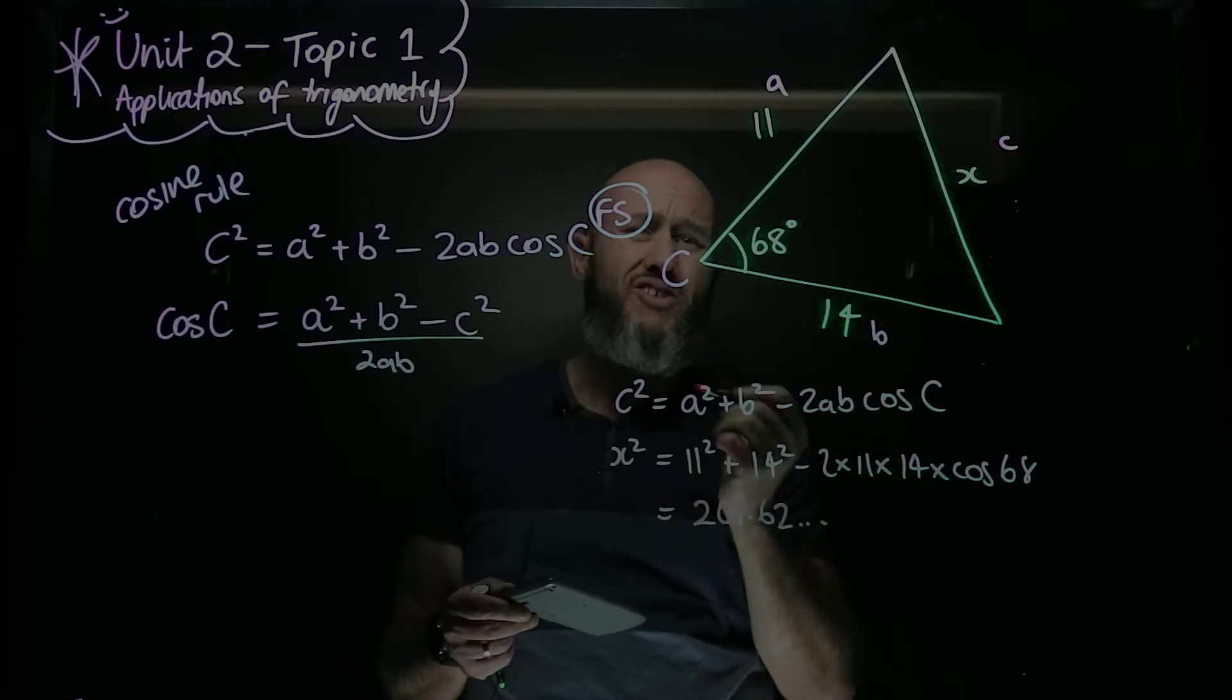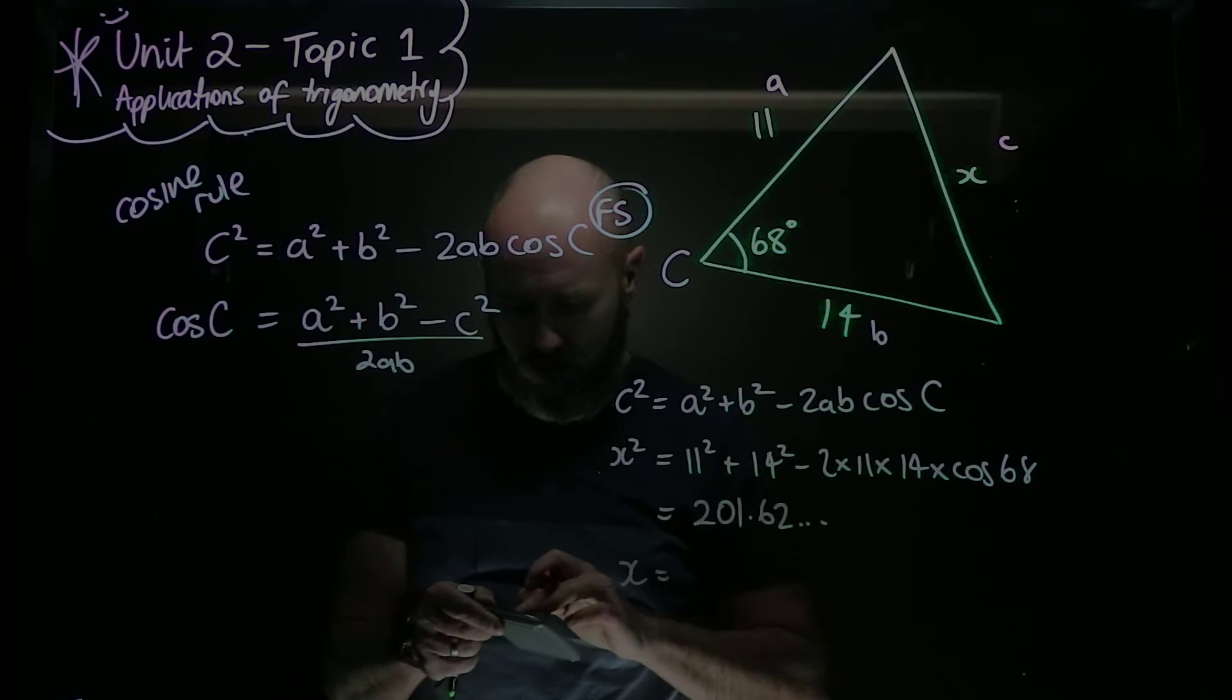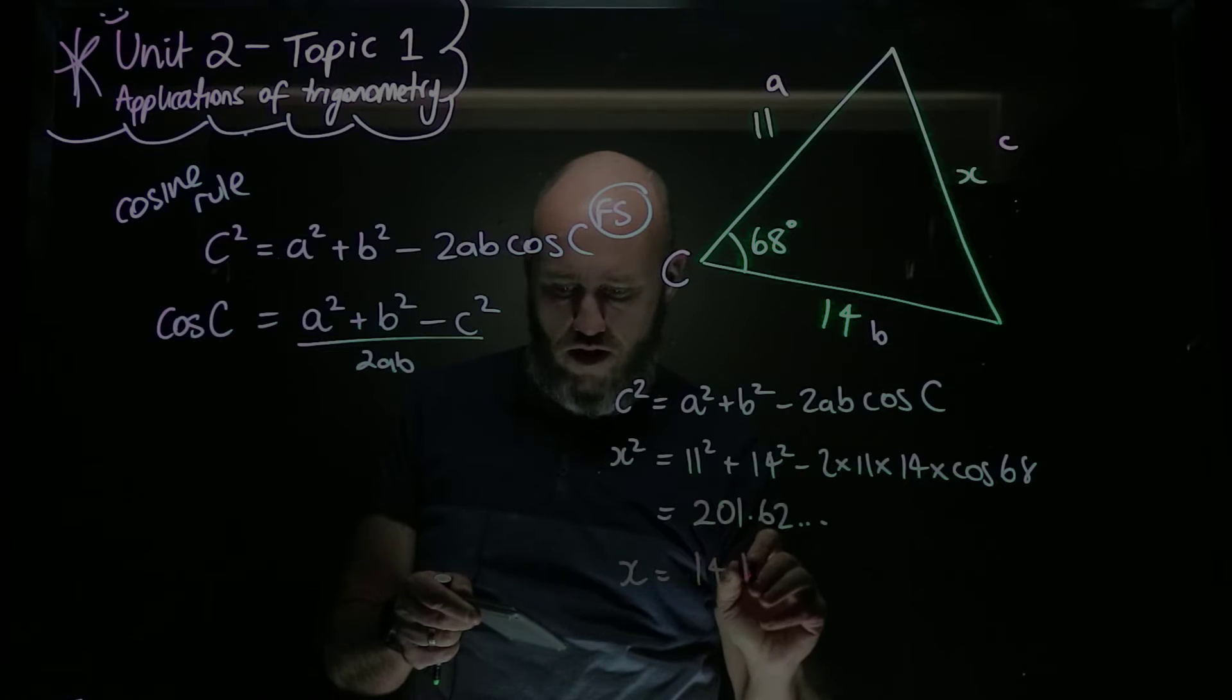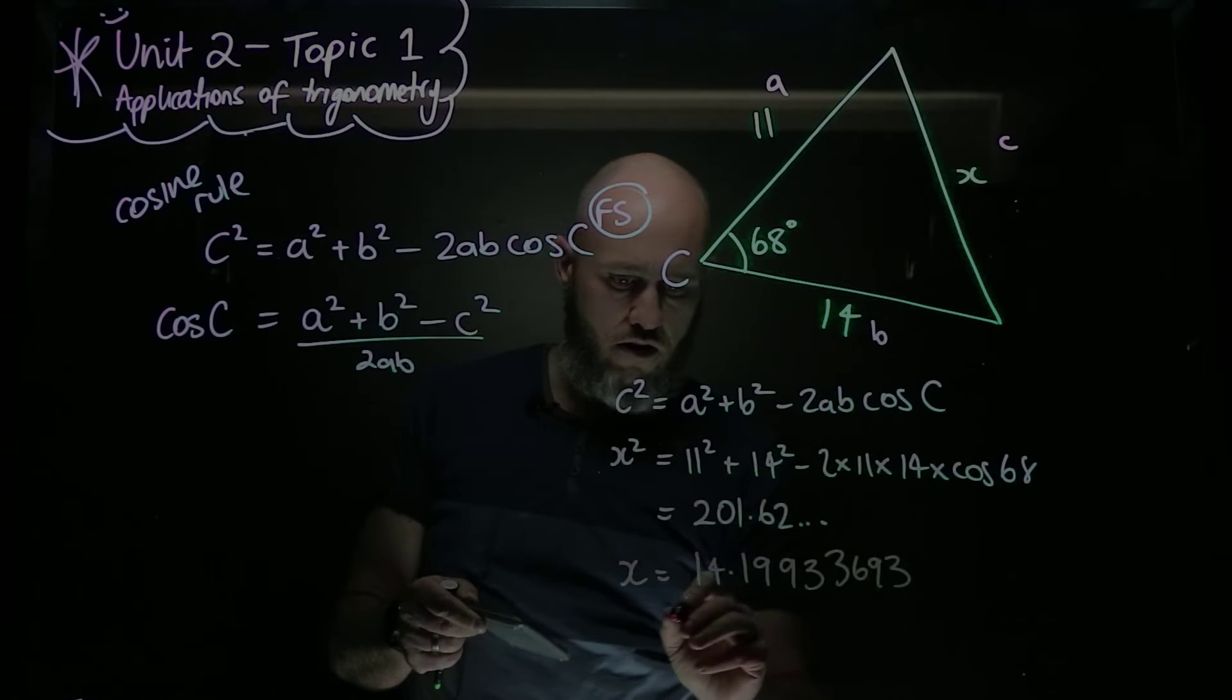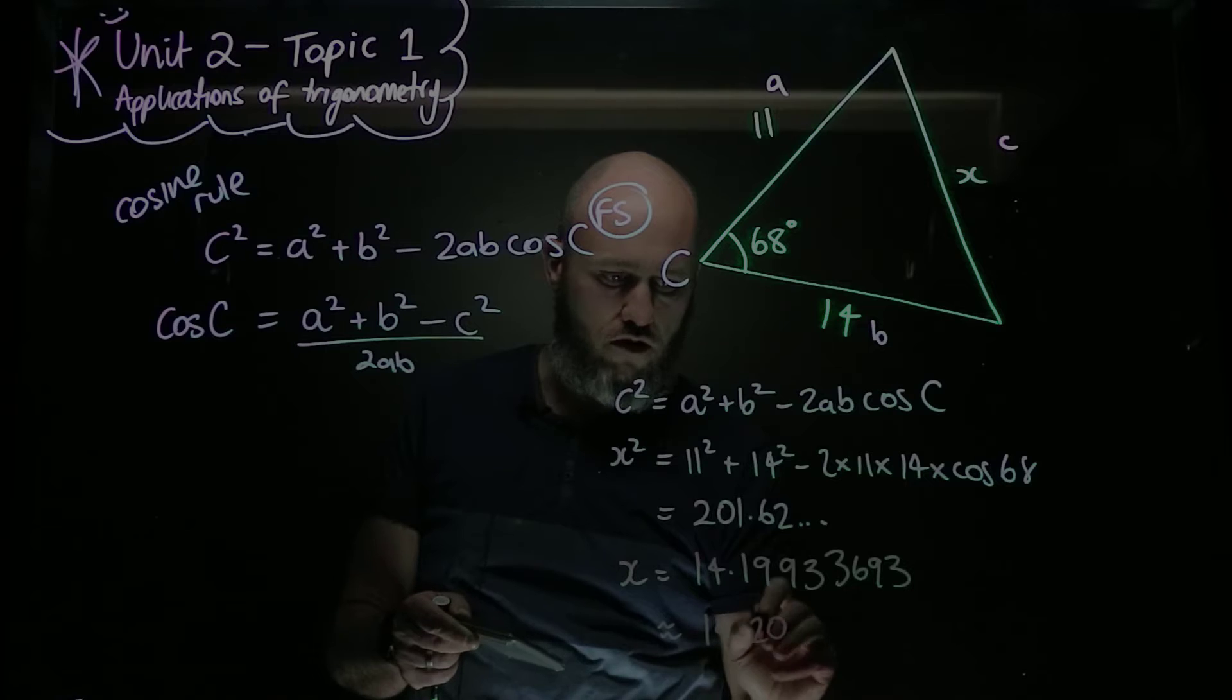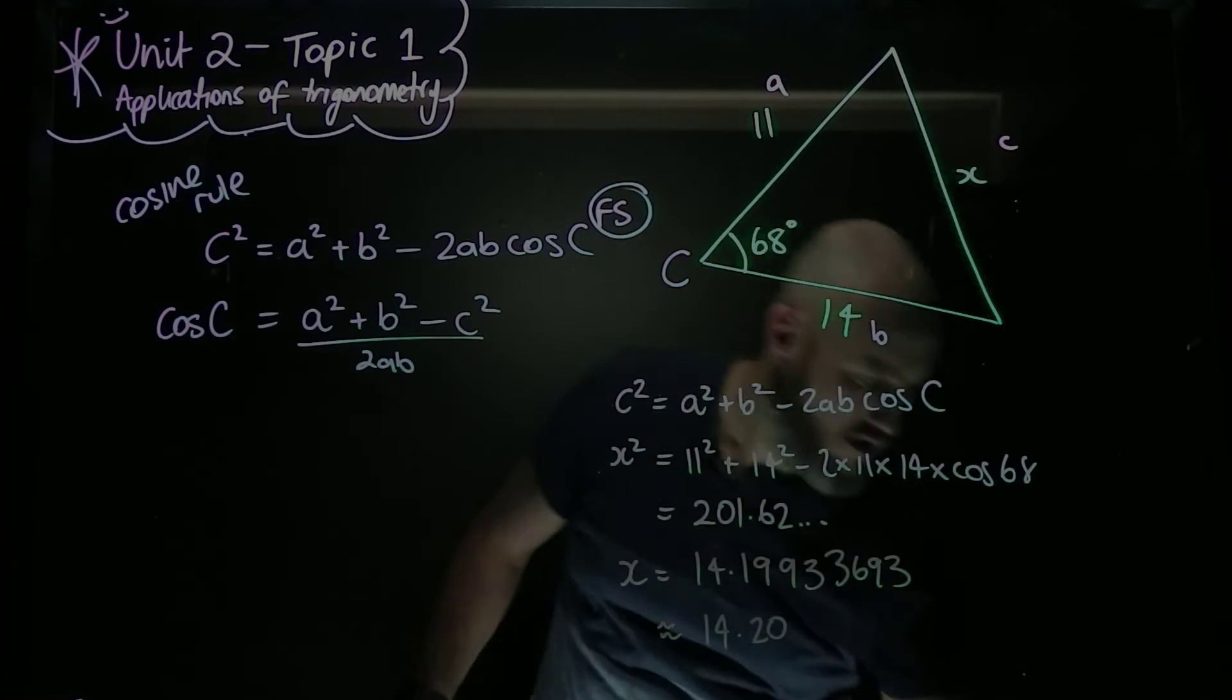That's our x squared value, not our x value. So I now need to take the square root, and x will be equal to the square root of that answer. And that's 14.19933693, and so to two decimal places, that's 14.20. And that makes more sense. We're happy with that 14.20 as our answer.